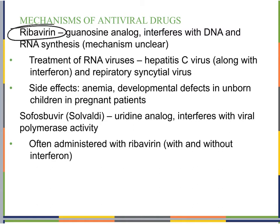Ribavirin is also a guanosine analog that interferes with both DNA and RNA synthesis, though exactly how it interrupts RNA synthesis is not entirely known. It's used for RNA viruses — for example hepatitis C virus, often along with interferon — and respiratory syncytial virus. Side effects include anemia and developmental defects in an unborn child if taken during pregnancy, since it affects RNA and DNA synthesis.